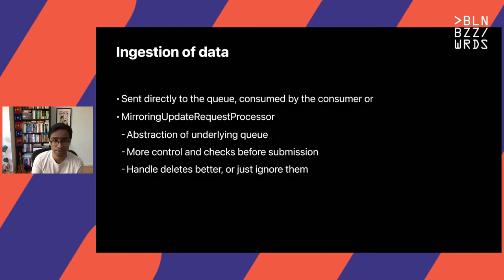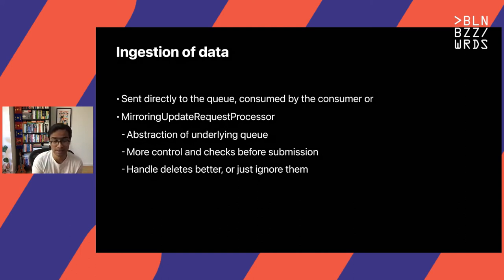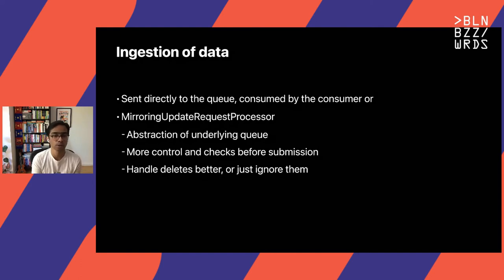The second benefit is that it allows for more checks and controls before submission. A request that's coming in might fail on the originating data center, in which case it shouldn't be written to the queue. But if you write directly to the queue, all these requests make it into Solr — it might succeed on one data center but not the other, say because the configs were different. And the cross-DC consumer would then have to be intelligent enough to figure out whether to retry, discard, or determine what to do with the request.